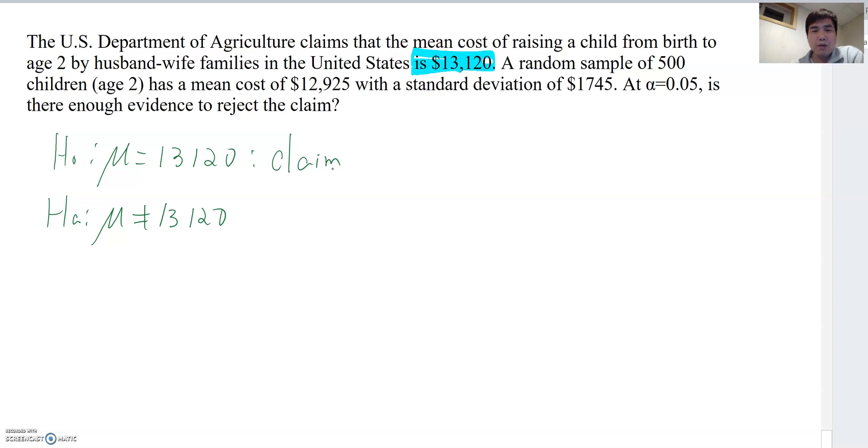Now let's collect all the known information. I can find out n = 500 from here. And then sample mean is $12,925. And then the standard deviation s = σ = 1745. And then α = 0.05.